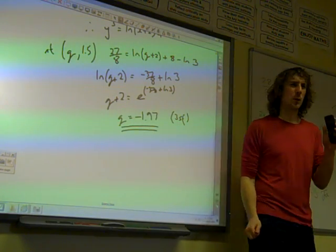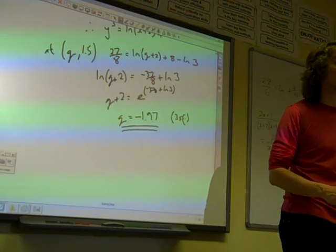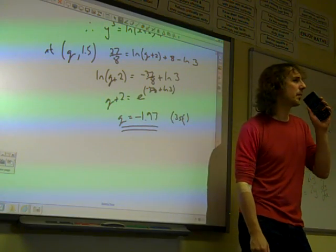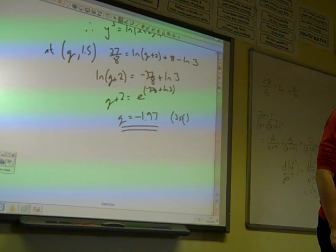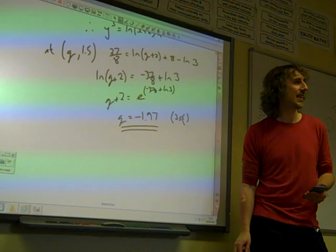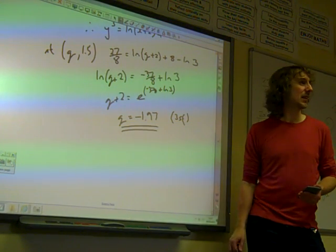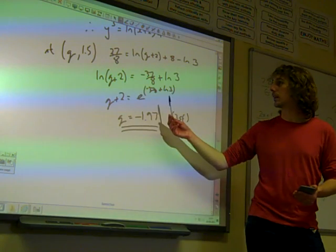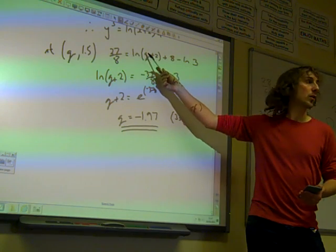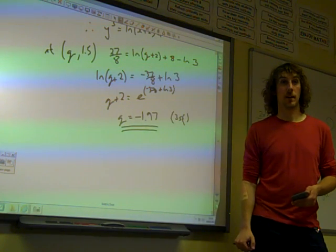There we go. It's well worth checking what questions say, whether it's saying an exact answer or 3 significant figures, because to get that exact answer, it's not a good answer. I don't know, with the ln(x+2), you could merge the lns together to get like ln equals 2 and 3.